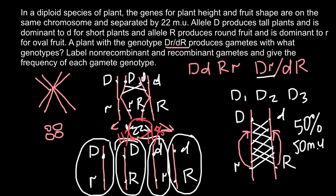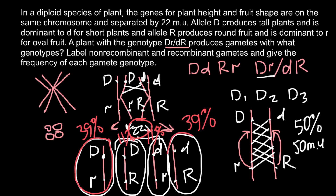100% minus 22% equals 78%, divided by 2 gives 39% for each parental genotype. So to answer the question: the non-recombinant gametes are capital D, small r (frequency 39%) and small d, capital R (frequency 39%). The recombinant gametes are capital D, capital R (frequency 11%) and small d, small r (frequency 11%).